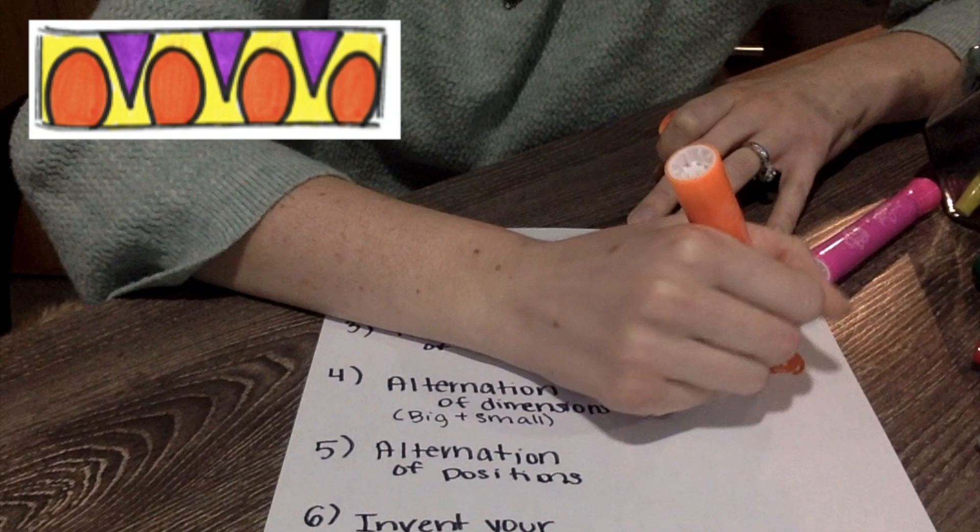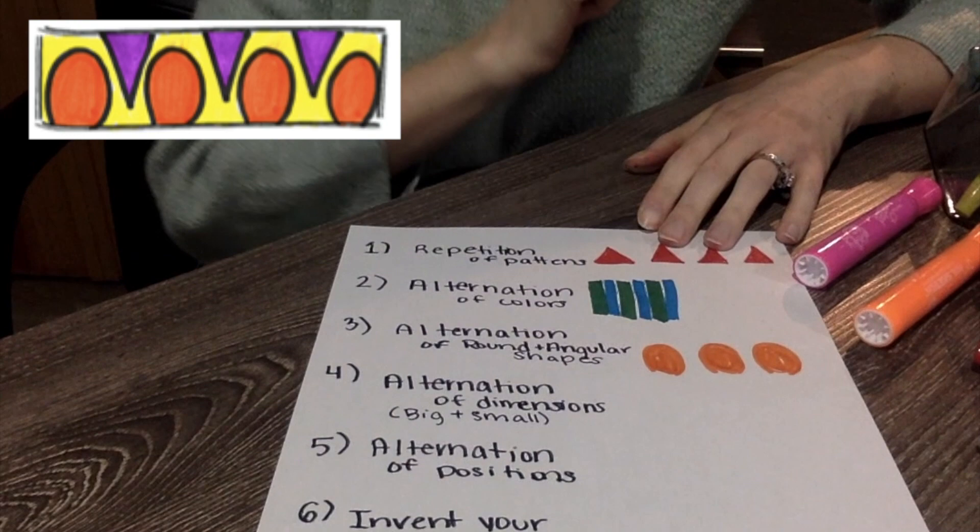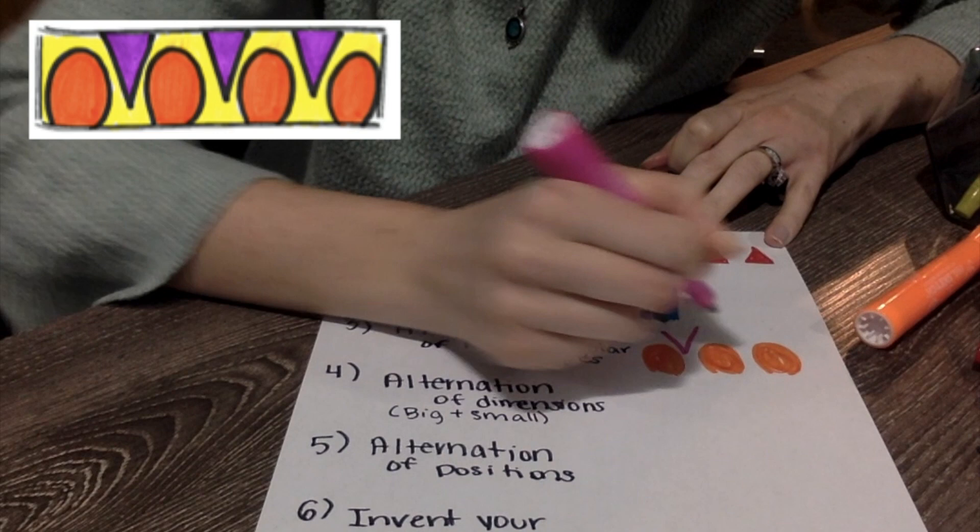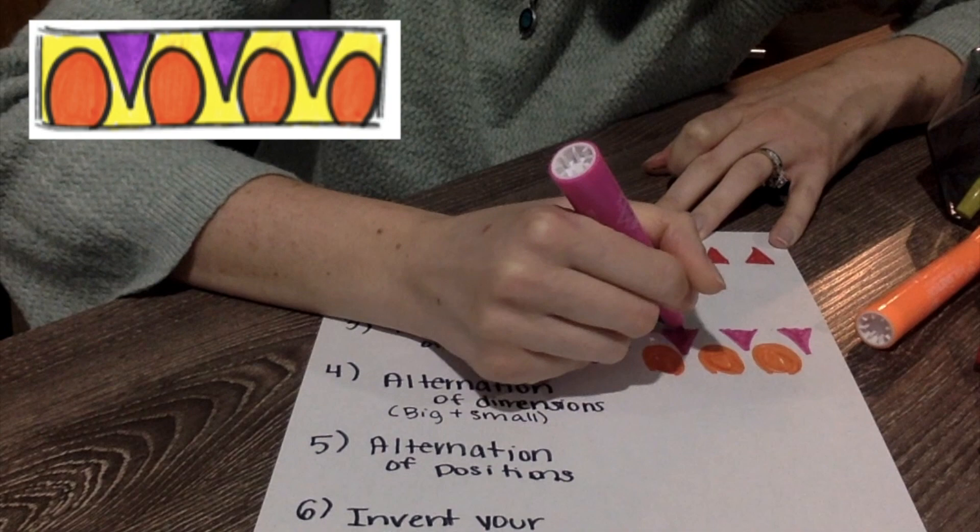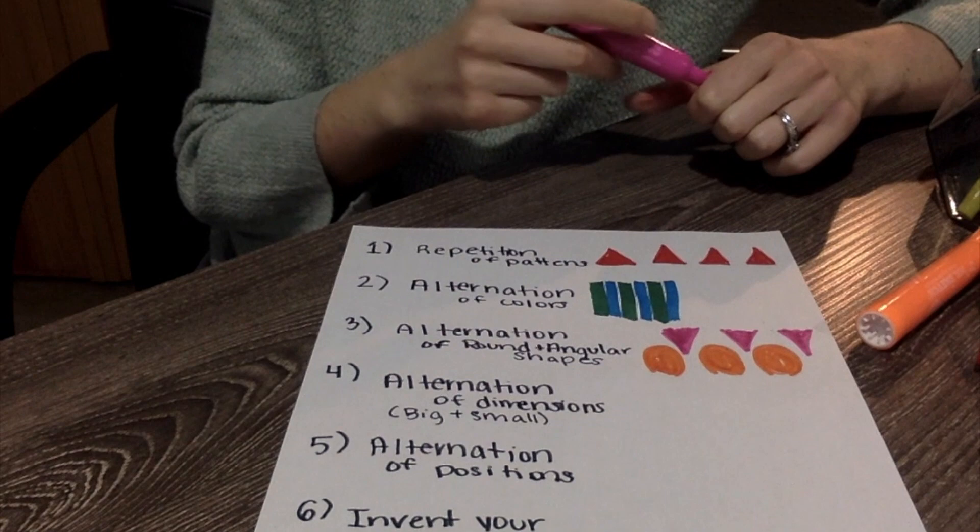And then in between all of those rounded shapes I'm going to put a pointy shape like so. So now I have round, angular, rounded, angular and I'm just alternating or switching back between the two different types.